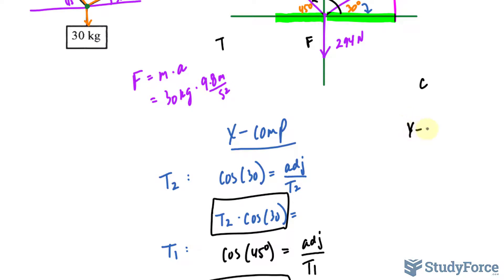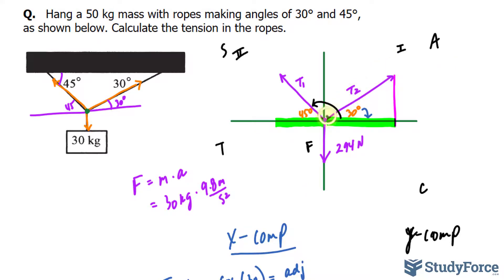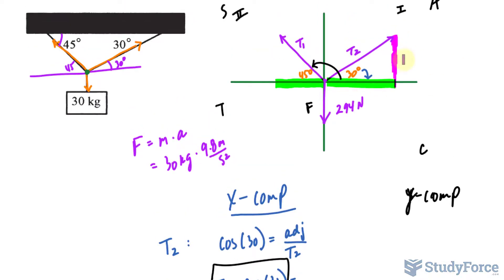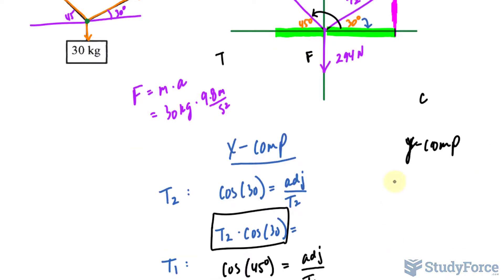Now we have to find the y components of each of these. We start with the y component of T2. This time we are looking for that part, and using 30 as our reference angle, we have opposite and hypotenuse. Opposite and hypotenuse is sine. Sine at 30 is the opposite over hypotenuse T2. Solving for opposite, we get T2 times sine 30, and that's equal to the opposite.